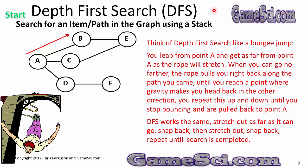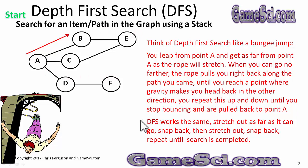Depth-first search, DFS, searches for an item or path in the graph using a stack. Think of it like a bungee jump: you leap from point A and get as far away as the rope will stretch. When you can go no further, the rope pulls you back along the path you came until gravity sends you back out. You repeat this up and down until you stop bouncing and are pulled back to point A — stretch out as far as you can, snap back, then stretch out again.